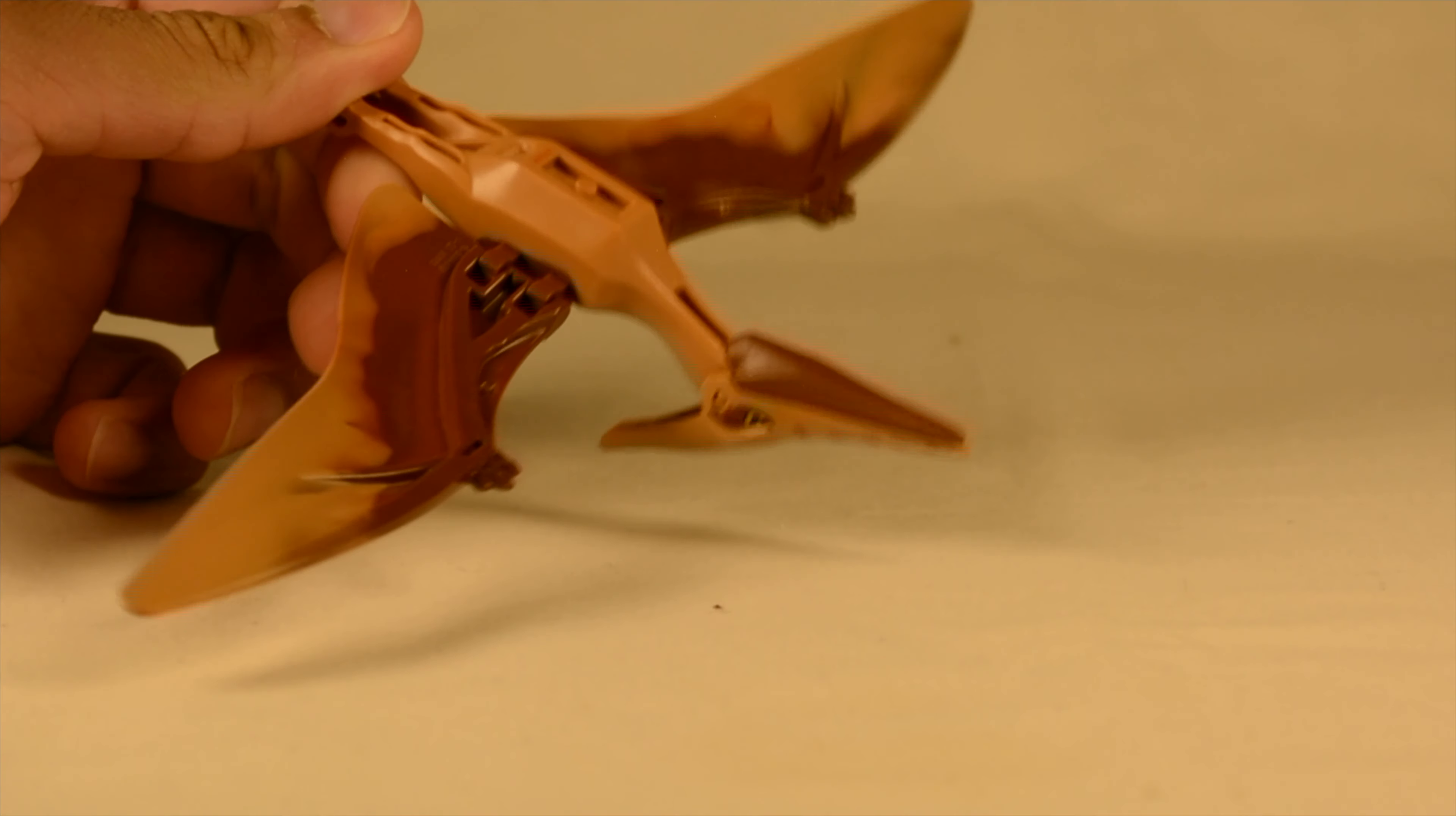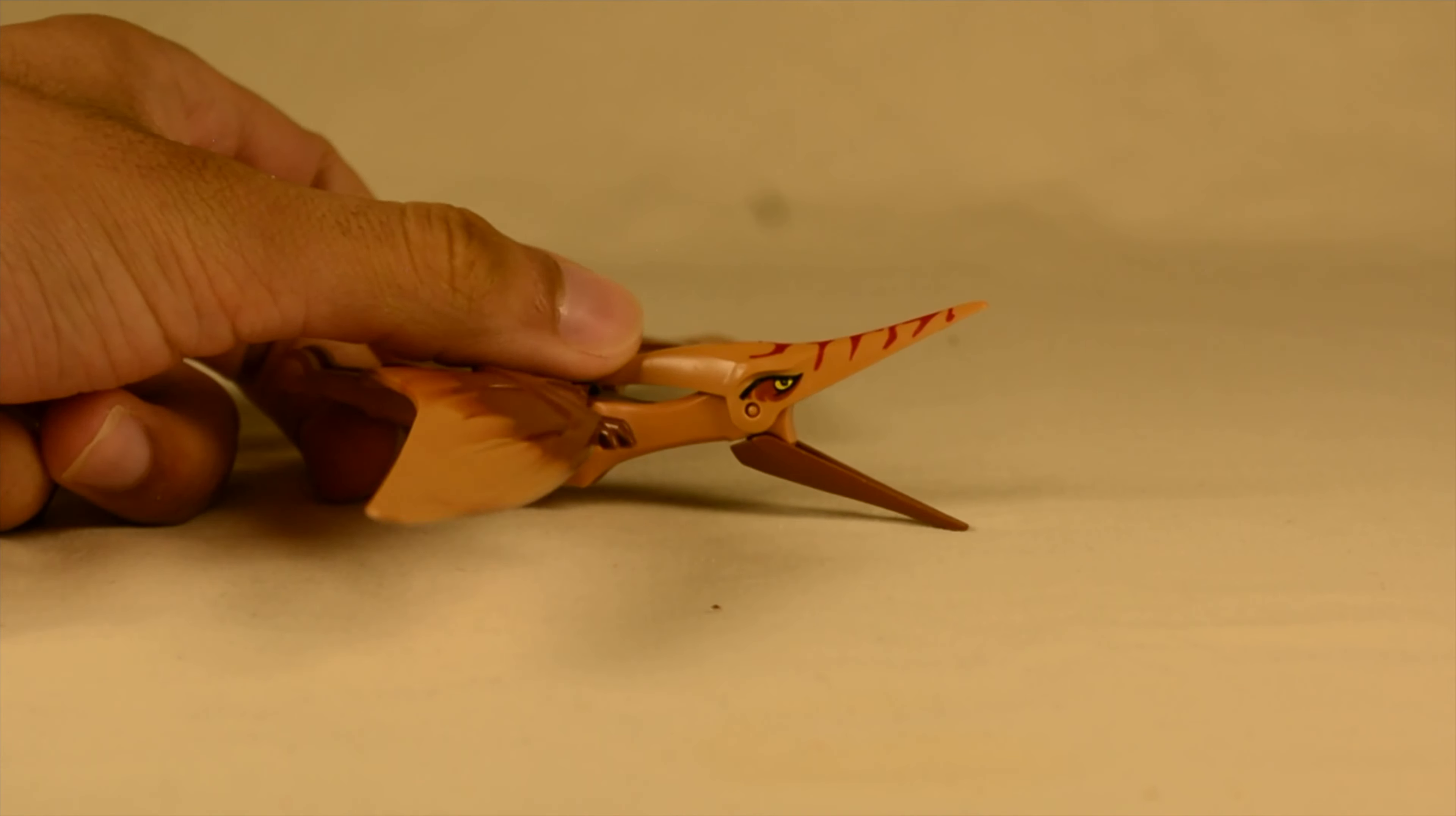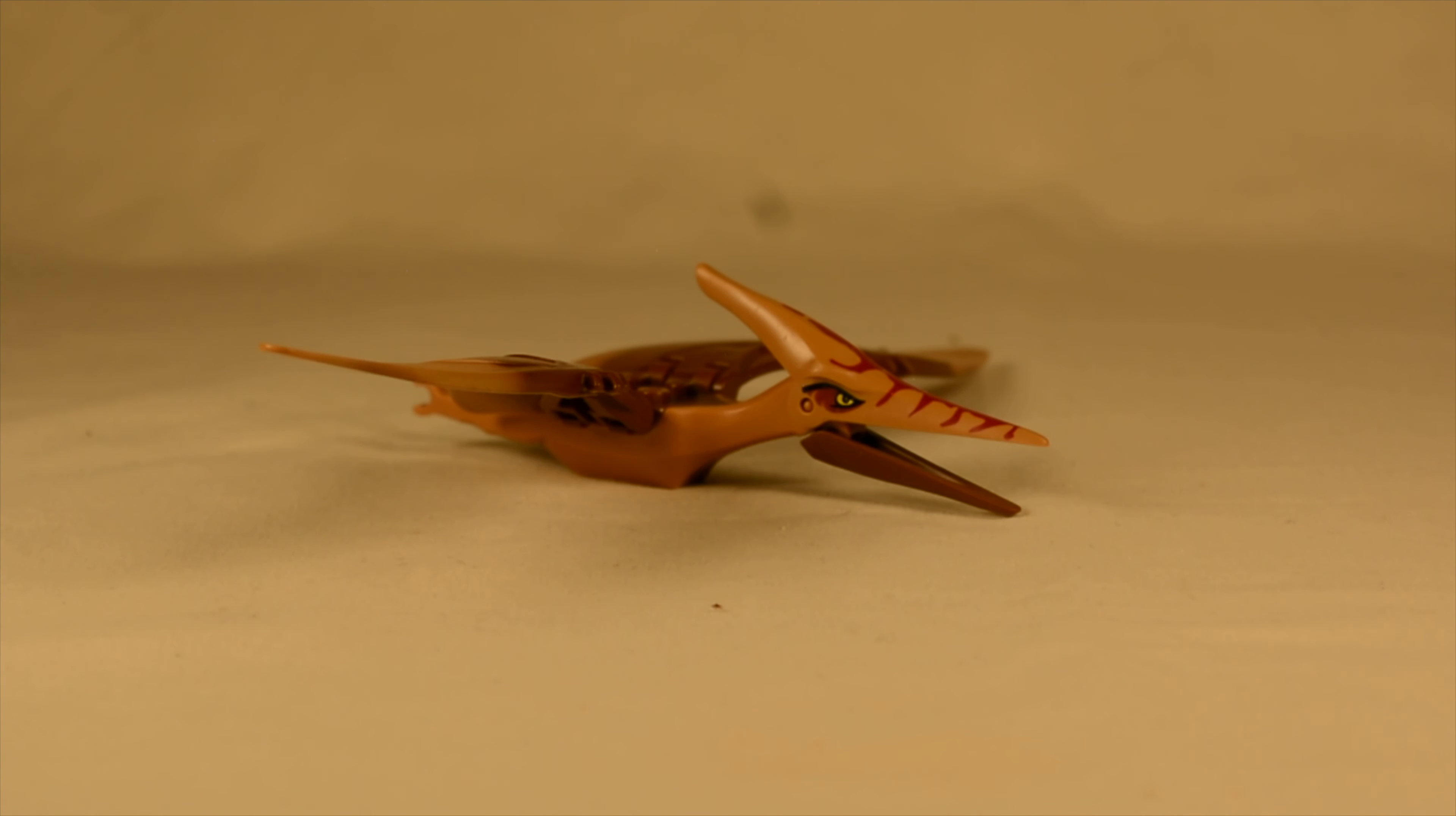It has a pivoting head and the main color scheme appears to be medium nougat and I'm honestly not even sure. It might be reddish brown. I'm not 100% sure. There's a fairly large wingspan and yeah it can do a little dance if it stands up on its legs. That's pretty much it for the pteranodon.